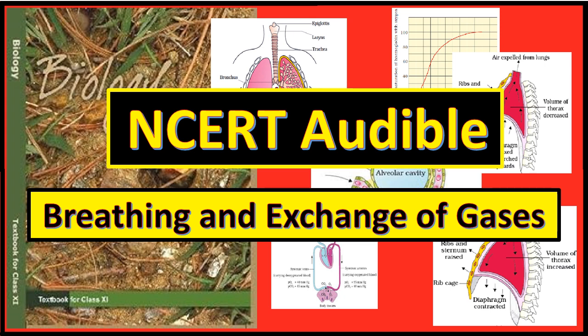As you have read earlier, oxygen is utilized by organisms to indirectly break down simple molecules like glucose, amino acids, fatty acids, etc. to derive energy to perform various activities. Carbon dioxide, which is harmful, is also released during the above catabolic reaction. It is therefore evident that oxygen has to be continuously provided to the cell and carbon dioxide produced by the cell have to be released out. This process of exchange of oxygen from the atmosphere with carbon dioxide produced by the cell is called breathing, commonly known as respiration.